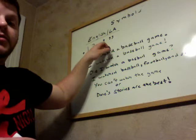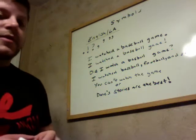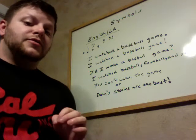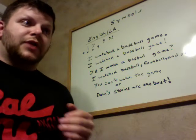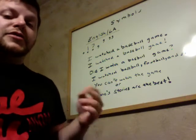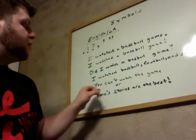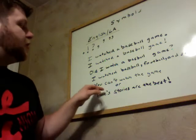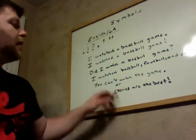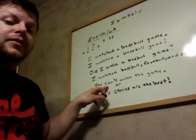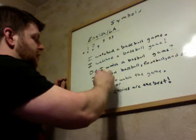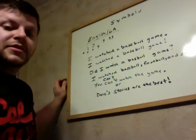The next mark we have is an apostrophe. Apostrophes are less common symbols, but they are very important in the language. Apostrophes are used in two ways. They're used first for contractions. For example, the sentence 'You cannot watch the game' — I broke down the word 'cannot' and instead said 'can't.' So the sentence becomes 'You can't watch the game.'